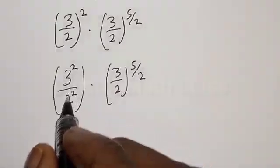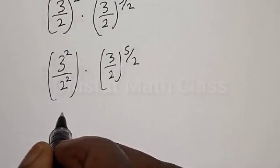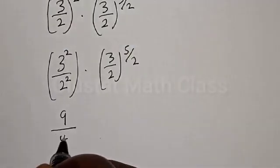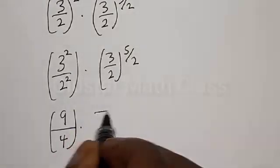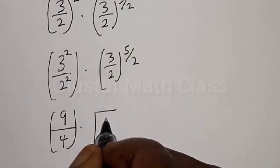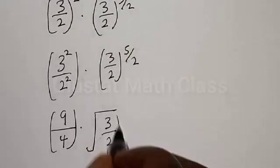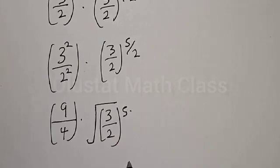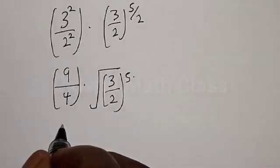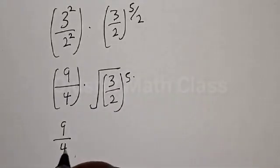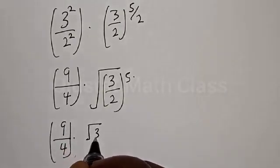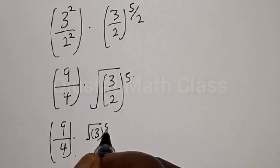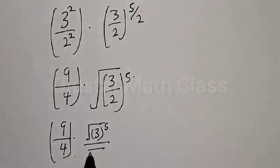Now, 3 squared is 9 and 2 squared is 4, so we have 9 over 4. Then 3 over 2 raised to the power 5 over 2 can be written as the square root of 3 over 2, all raised to the power 5 — that is, root 3 raised to the power 5 over root 2 raised to the power 5.